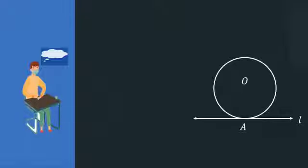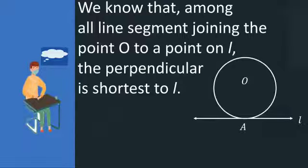Before proving the theorem, let us recollect our knowledge. We know that among all line segments joining the point O to a point on L, the perpendicular is the shortest to L.